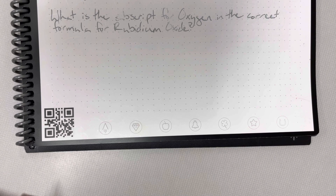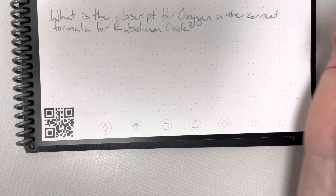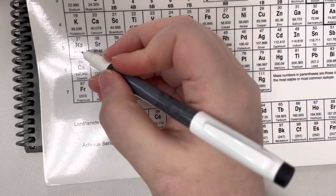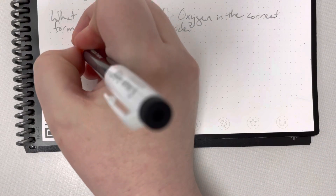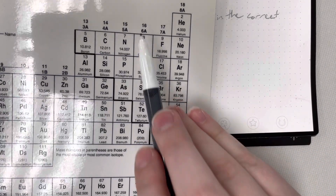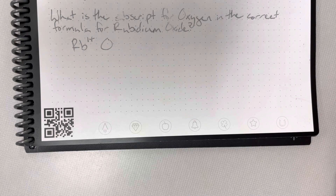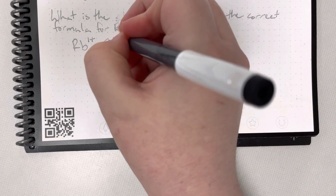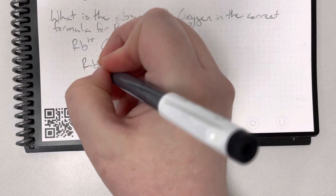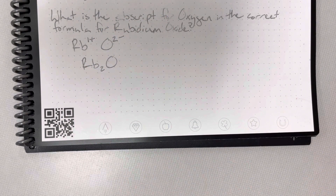What is the subscript for oxygen in the correct formula for rubidium oxide? Rubidium's element symbol is Rb and it is in column 1, so it has one valence electron. It's going to give that one valence electron away — giving a gift is a nice thing to do — so it has a charge of positive 1. Oxide is secretly oxygen, element symbol O, in column 6. It has six valence electrons but wants eight, so it steals two. Stealing is bad, so it has a charge of negative 2. When I crisscross charges for subscripts, I am left with Rb₂O.